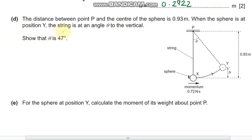Part (d) says the distance between point P and the center of the sphere is 0.93 meters. When the sphere is at position Y, the string is at an angle theta to the vertical. Show that theta is 47 degrees. We have already found the height which is 0.29.